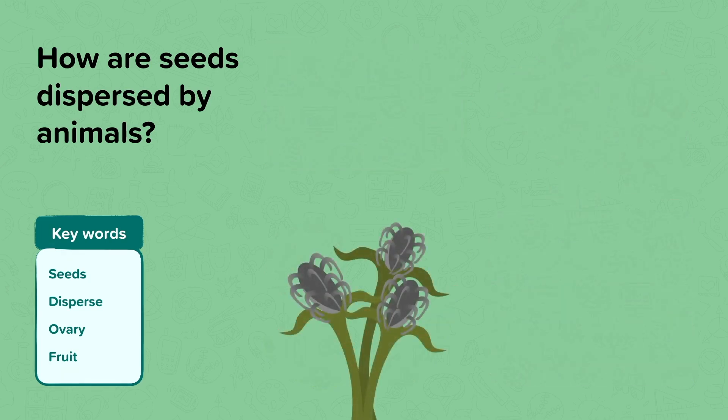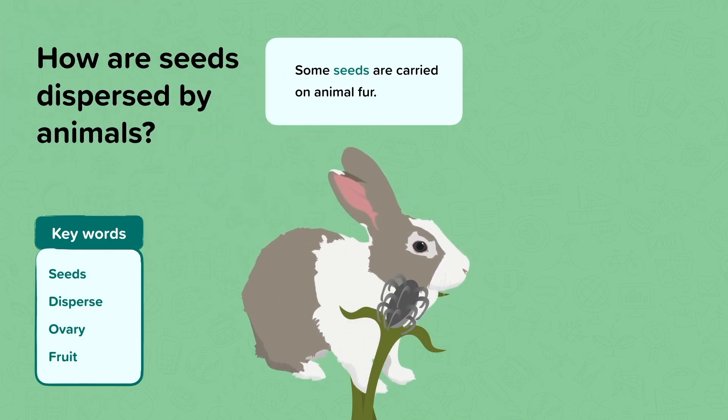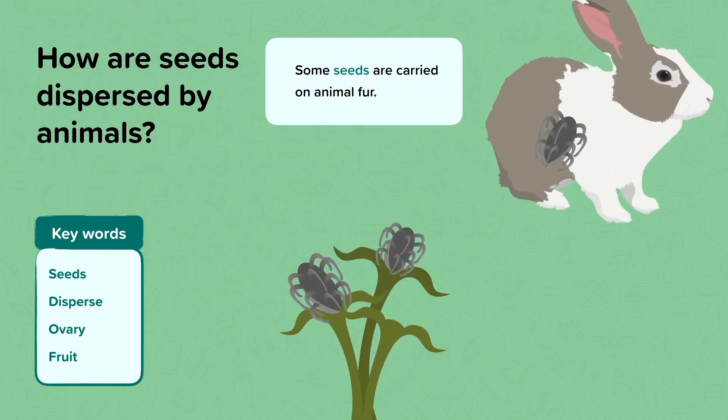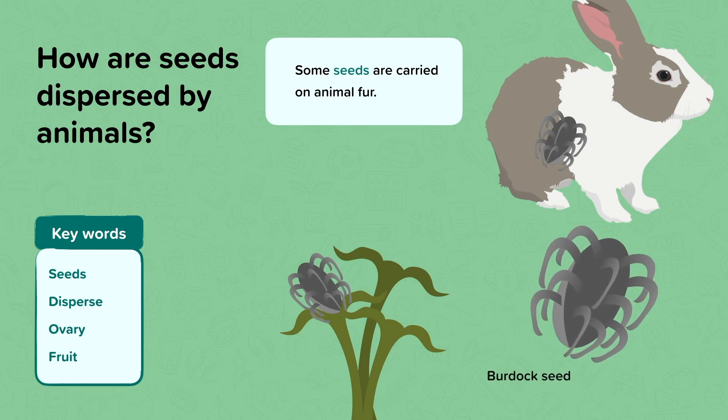There is one other way that animals disperse seeds. Some seeds are carried on the animal's fur. These seeds often have little hooks, which means they stick to the animals as they brush past them and get carried away by the animal. This is an example of a burdock seed.